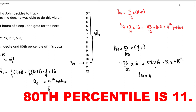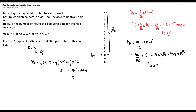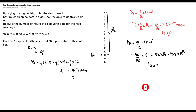So our 80th percentile P80 equals 11, and our seventh decile D7 equals 10. This is how we find the quartile, the decile, and the percentile of an ungrouped data set. If you learned something new in this video, please like and subscribe to this YouTube channel and turn on notifications — I release new videos at least twice a week. Thanks for watching!